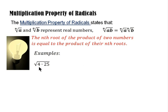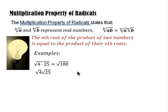We have: the square root of (4 × 25) equals the square root of 4 times the square root of 25. For the left side, the product of 4 and 25 is 100, and the square root of 100 is 10. On the right side, the square root of 4 is 2 and the square root of 25 is 5, giving 2 × 5 = 10. Both sides are equal.